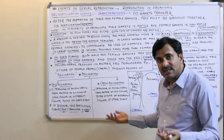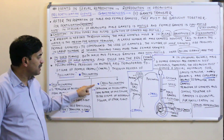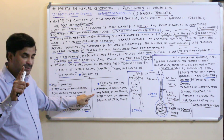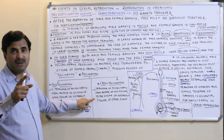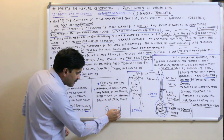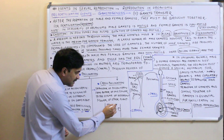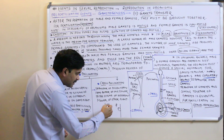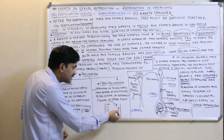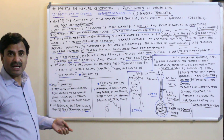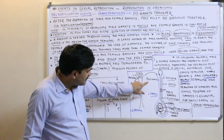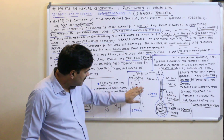Cross-pollination is the transfer of pollen grains from the anther of one flower to the stigma of a different flower on a different plant. For example, if one plant has a male flower and another has a female flower, and pollination occurs between these two different flowers on different plants, it is called cross-pollination.